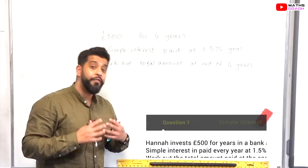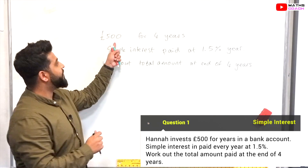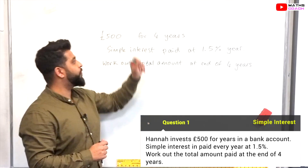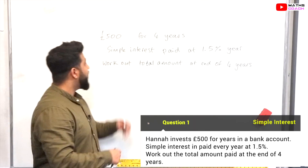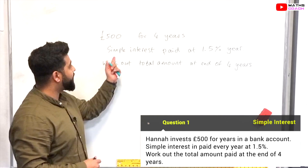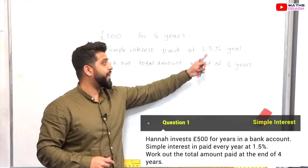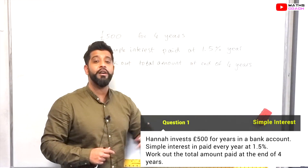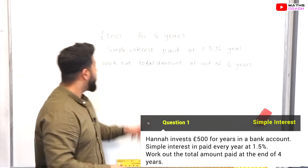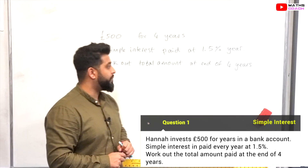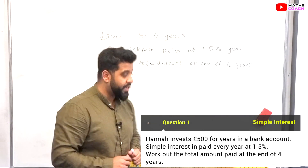Our first question: Hannah invests £500 for four years in a bank account. The bank account pays simple interest at 1.5% every single year, and we want to work out the total amount at the end of four years.